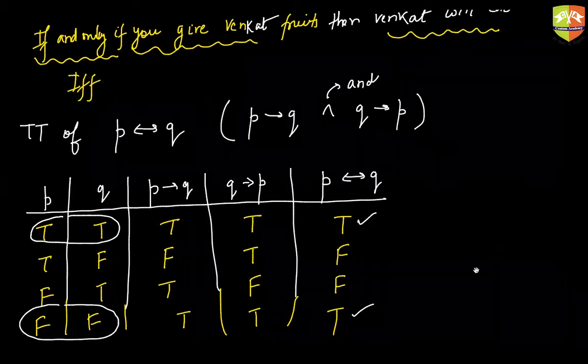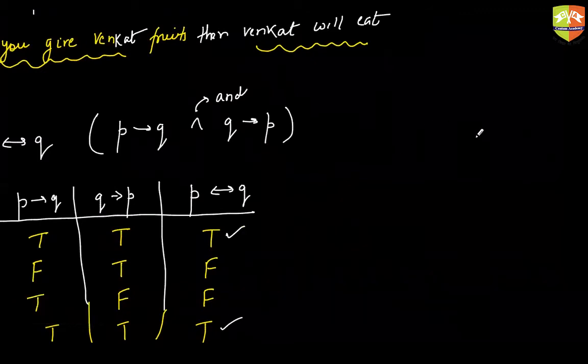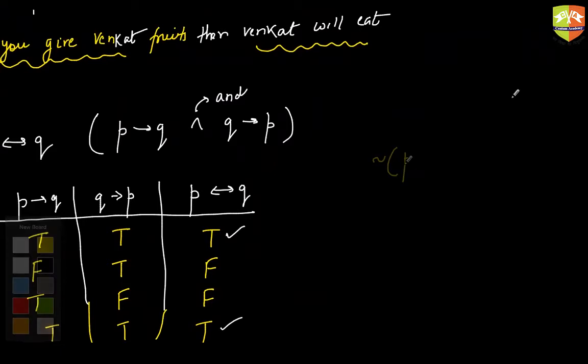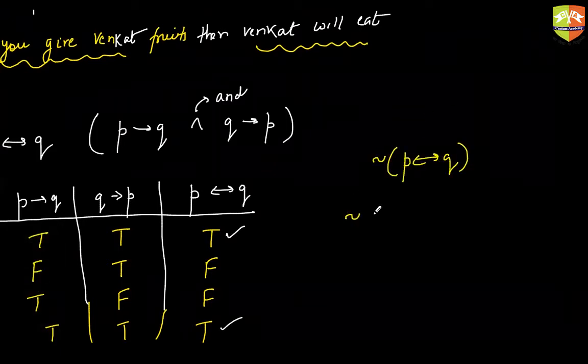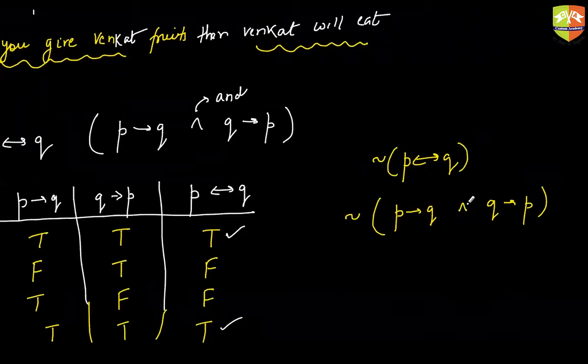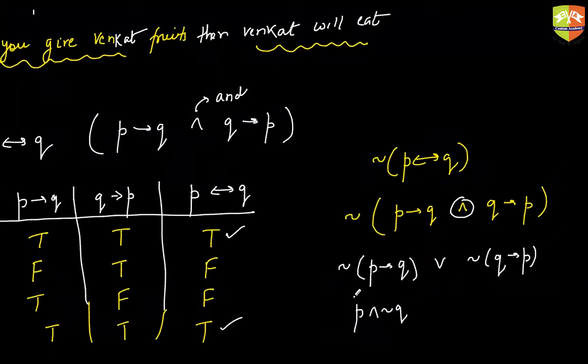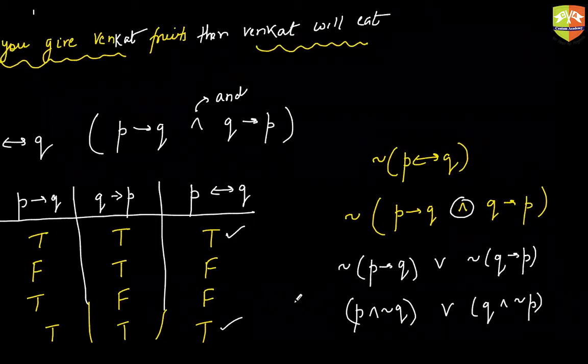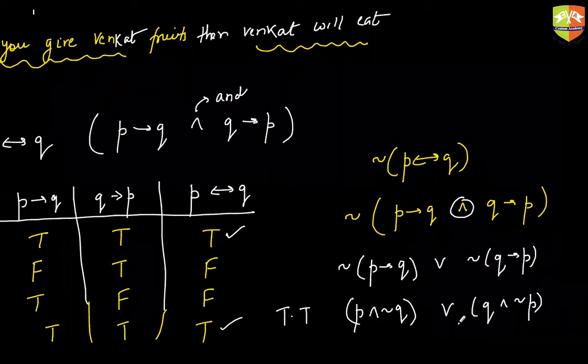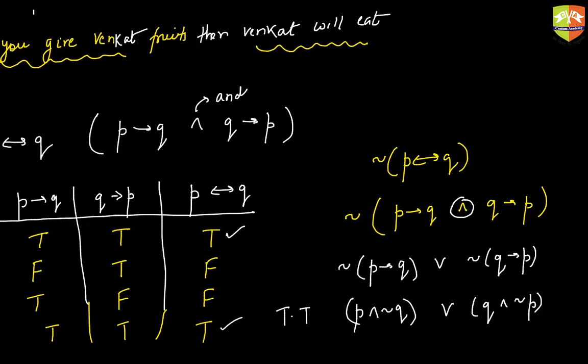Now if I ask you tell me the negation of this. The negation of this is the negation of p if and only if q. Now you know when two statements are connected by a conjunction you normally write it as negation with disjunction. And this itself is p and not q or q and not p. Do it for homework, draw the truth table for this and check whether the table gives you false true true false.